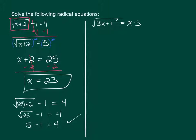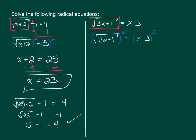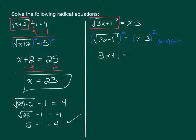For this next example, again we want to make sure that the square root is isolated. There's nothing on the same side of the equation outside of the radical, so we can go right into squaring. When you square a square root, those cancel, so on the left side we'll be left with 3X plus 1. On the right side, we actually have to FOIL this out — we cannot just distribute the square to the X and to the 3. When you square something, you multiply it by itself: X minus 3 times X minus 3 gives X squared minus 6X plus 9.